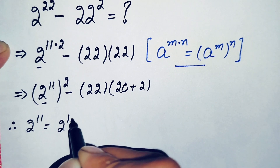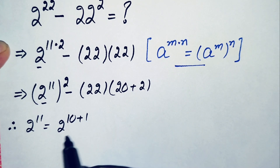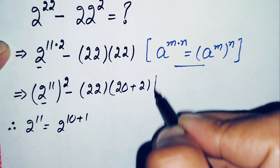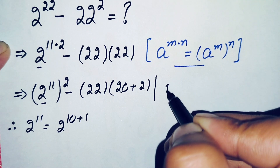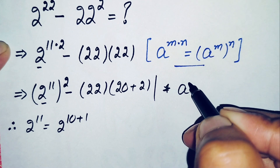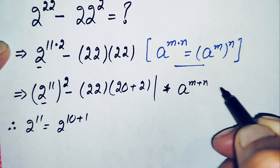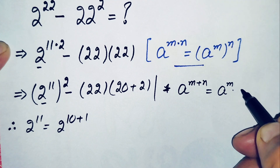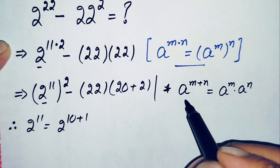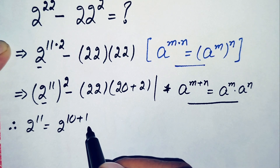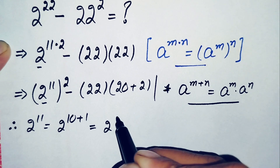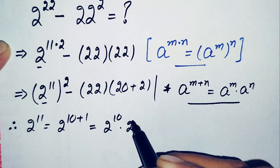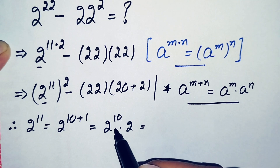We write 2 raised to power 11 as 2 raised to power 10 plus 1. Using the exponent property a raised to power m plus n equals a raised to power m times a raised to power n, this becomes 2 raised to power 10 times 2 raised to power 1, which is simply 2.